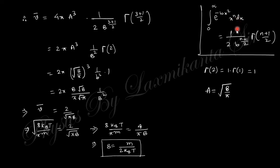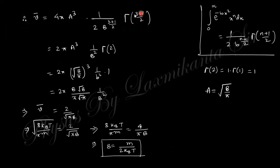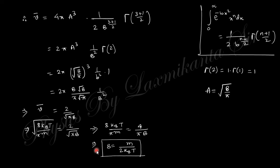Using the gamma function formula: the integral from 0 to infinity of e^(-bx²)·x^n·dx equals (1/2)·b^(-(n+1)/2)·Γ((n+1)/2). With n = 3, this gives Γ(2) = 1. Since a = √(b/π), substituting everything and simplifying yields the known result that average velocity equals √(8kbT / πm). Comparing this with the derived expression gives b = m / (2kbT).